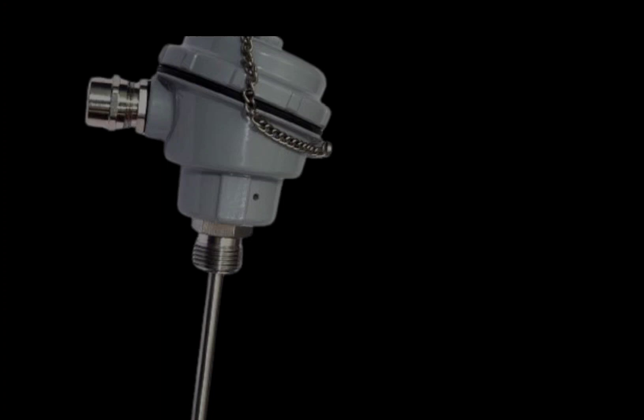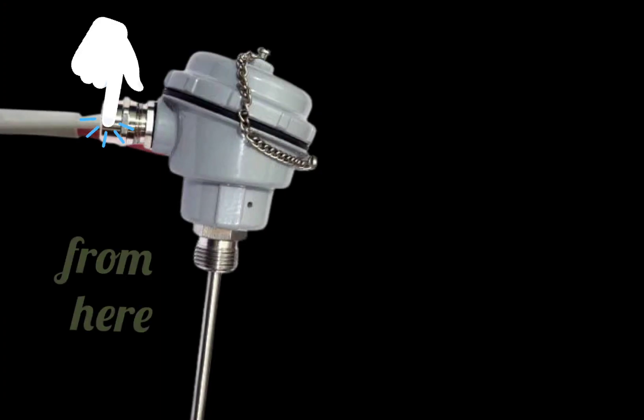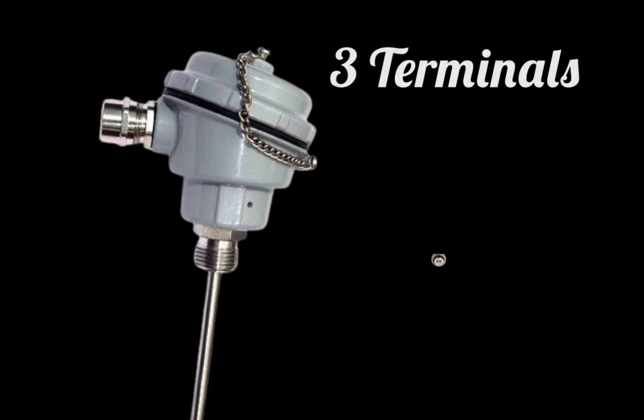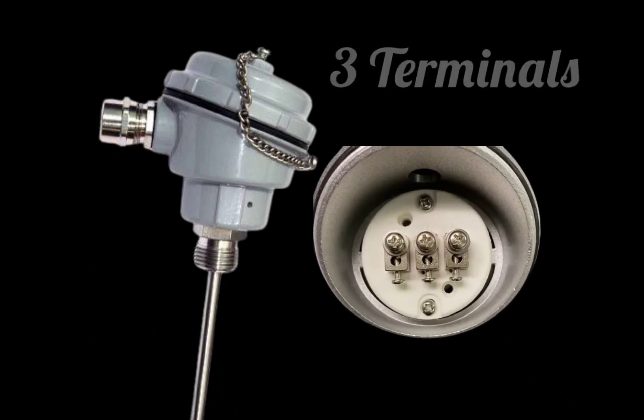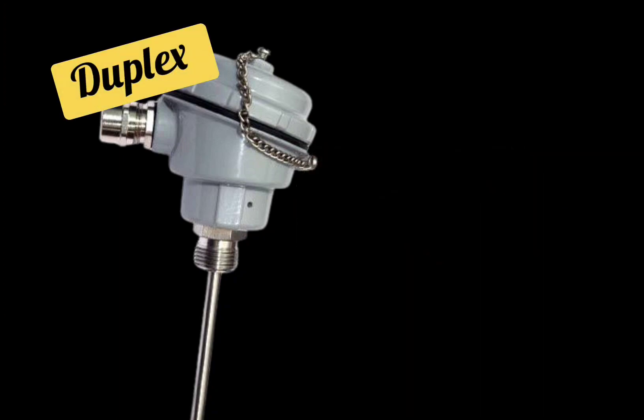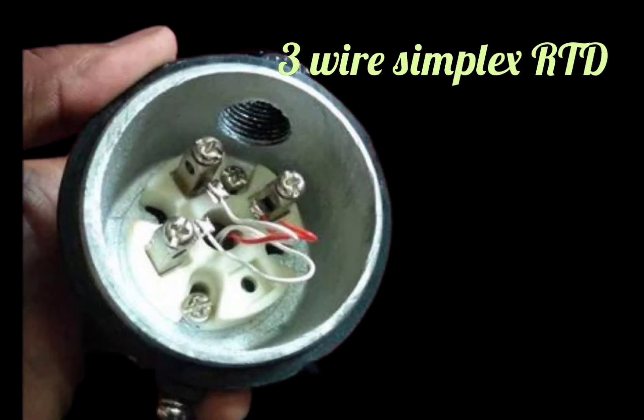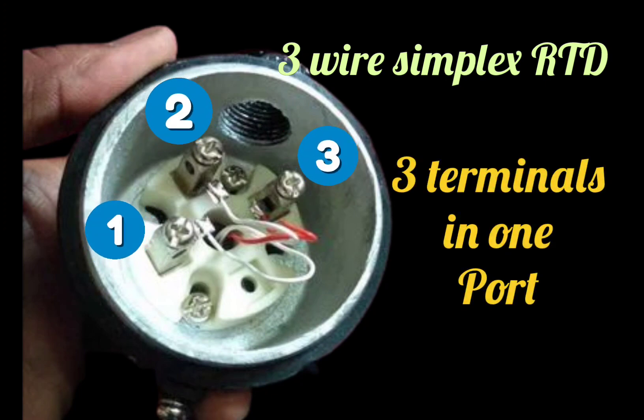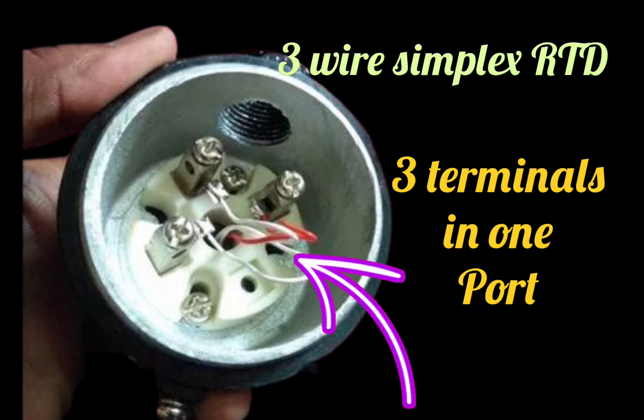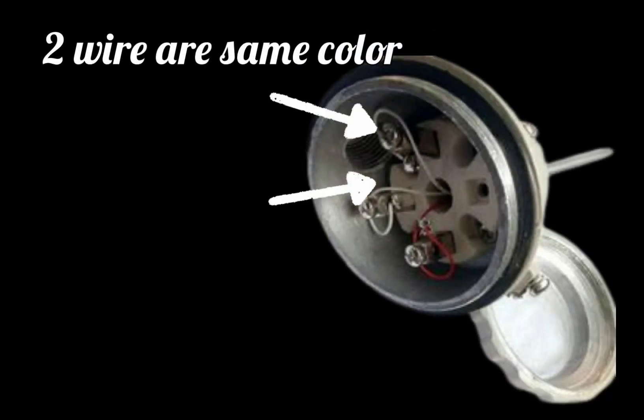For RTD connections, you need to insert the wire. For connections in RTD, you will see three terminals. And if you are using duplex RTD, then you will see six terminals. Suppose there is a three-wire simplex RTD. It will have one port and three terminals, and on these terminals three wires will be connected from inside the RTD.